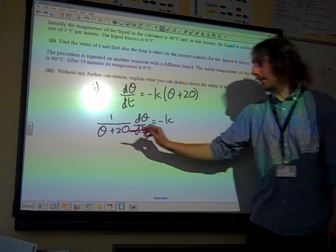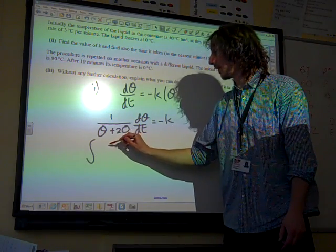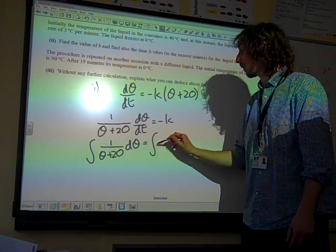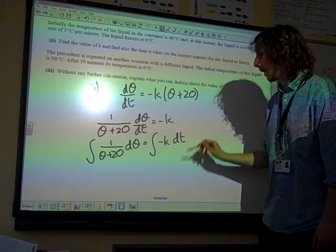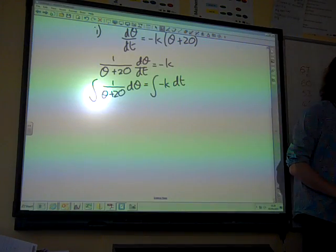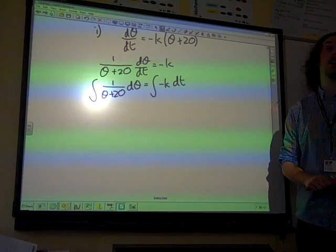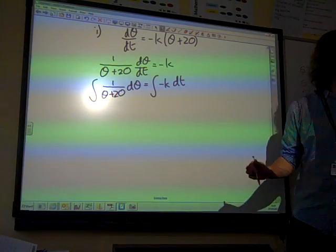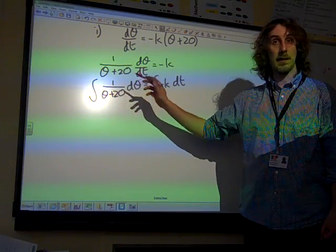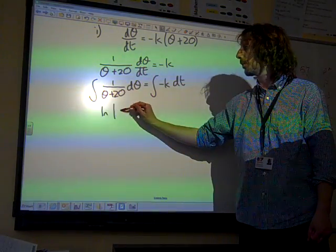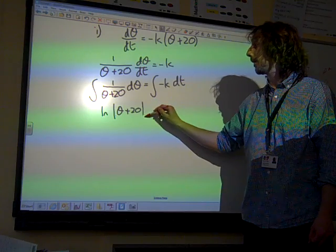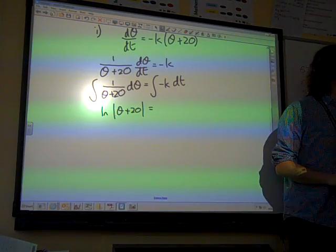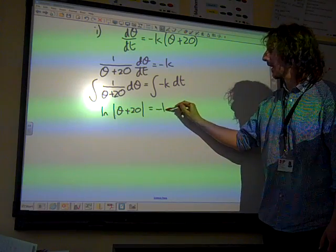Giving us the integral of 1/(θ + 20) dθ, and the integral of -k dt. The left-hand side is just a fairly standard integral. That's the natural log of θ + 20. If we integrate -k, we're going to get -kt.